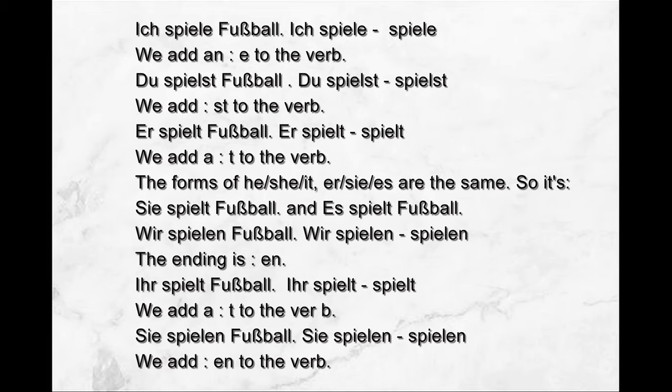The forms of he, she, it — er, sie, es — are the same. So it's sie spielt Fußball and es spielt Fußball. We add a 't' to the verb. Sie spielen. We add 'en' to the verb.